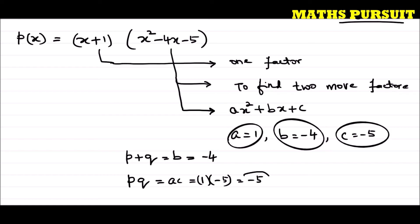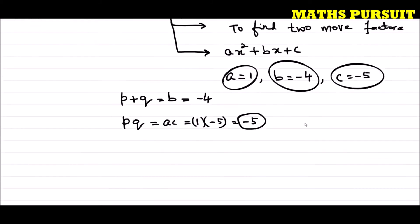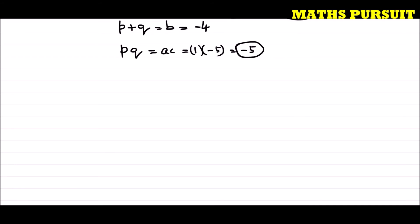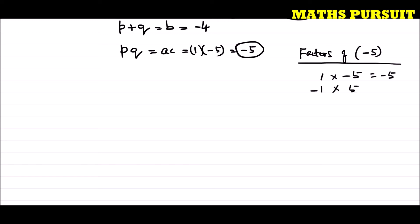The factors of minus 5 are 1 times minus 5, and minus 1 times 5. Adding 1 and minus 5 gives minus 4, which matches b. Adding minus 1 and 5 gives plus 4, which does not match. So p equals 1 and q equals minus 5.